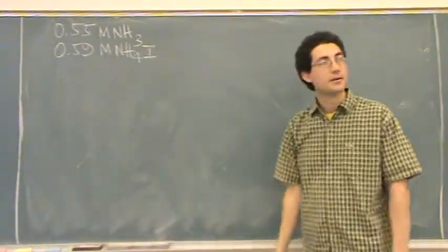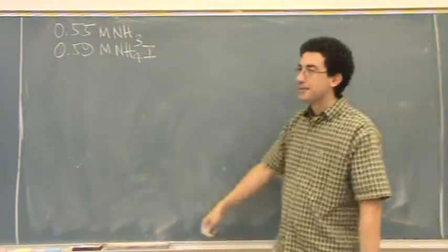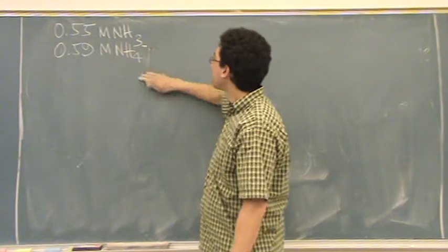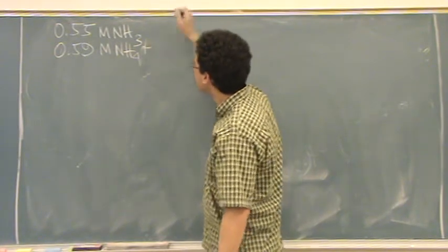How do I know that's a buffer? It's a conjugate acid - weak base and its conjugate acid. What about the I? Spectator. Forget about it.